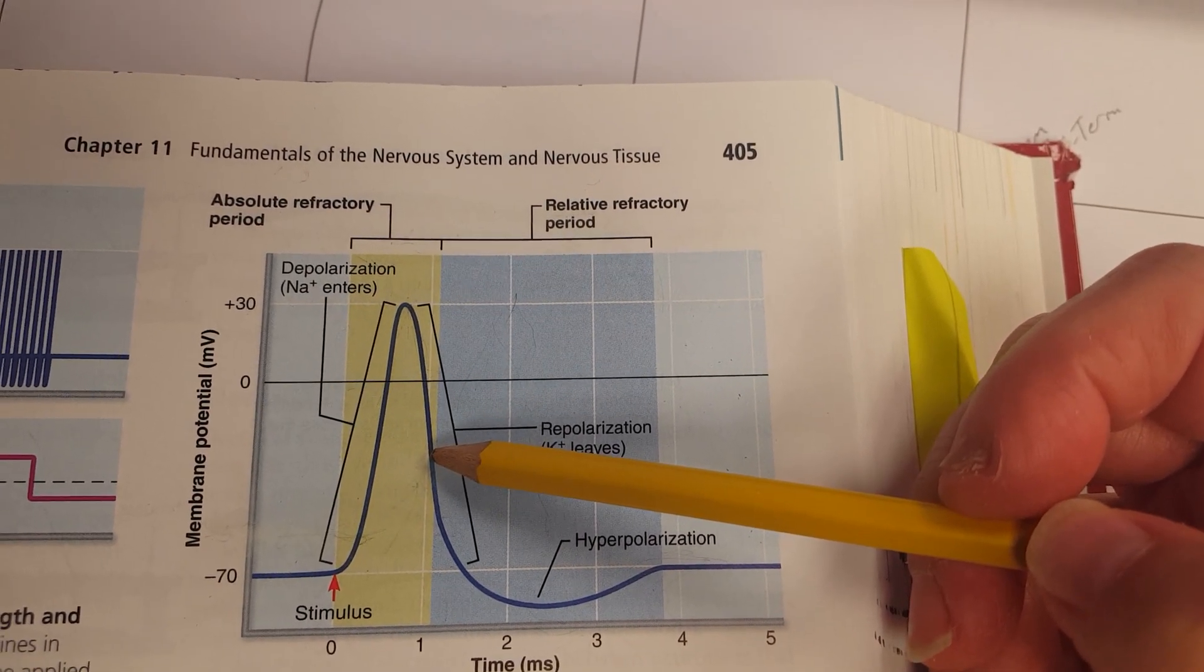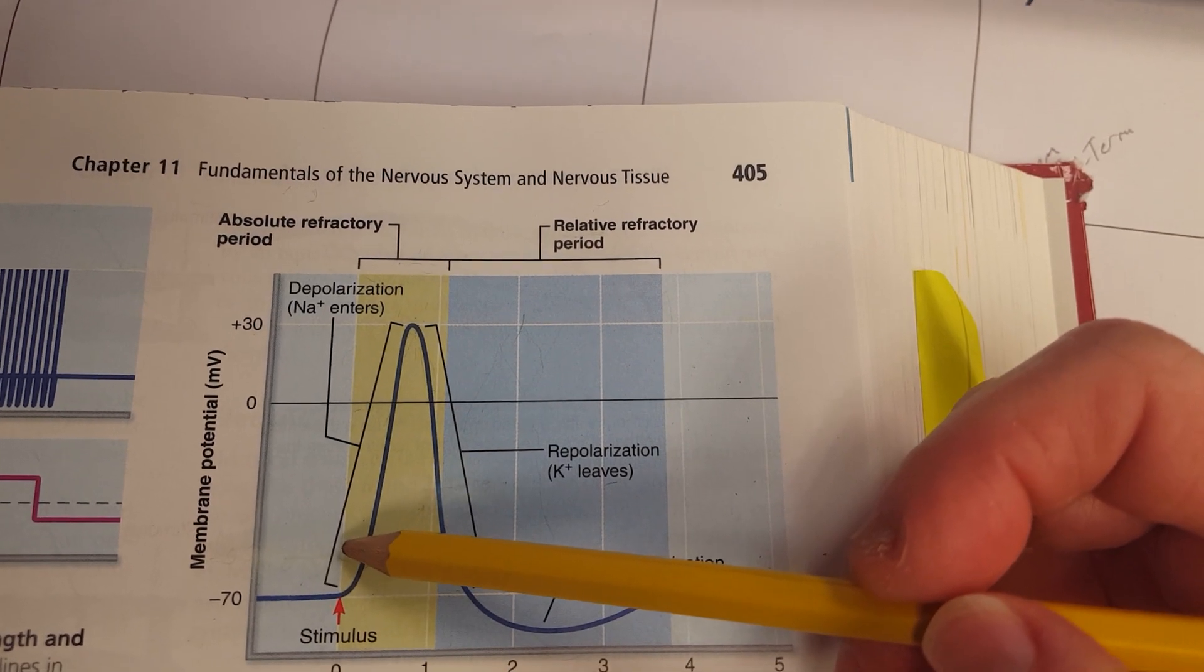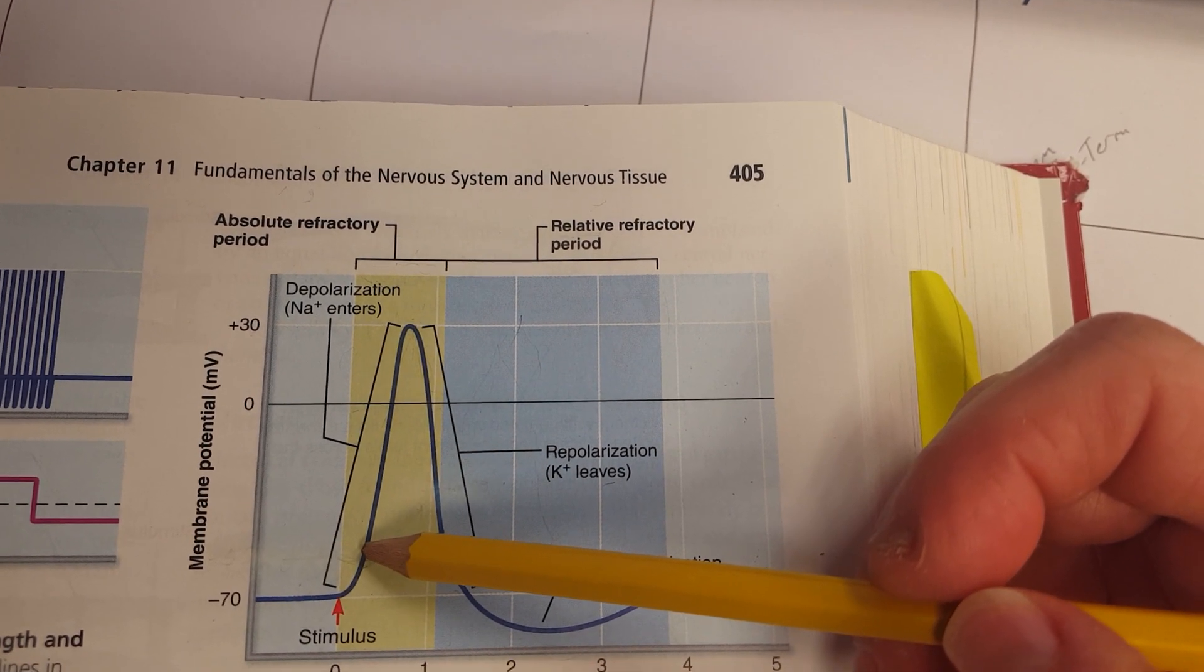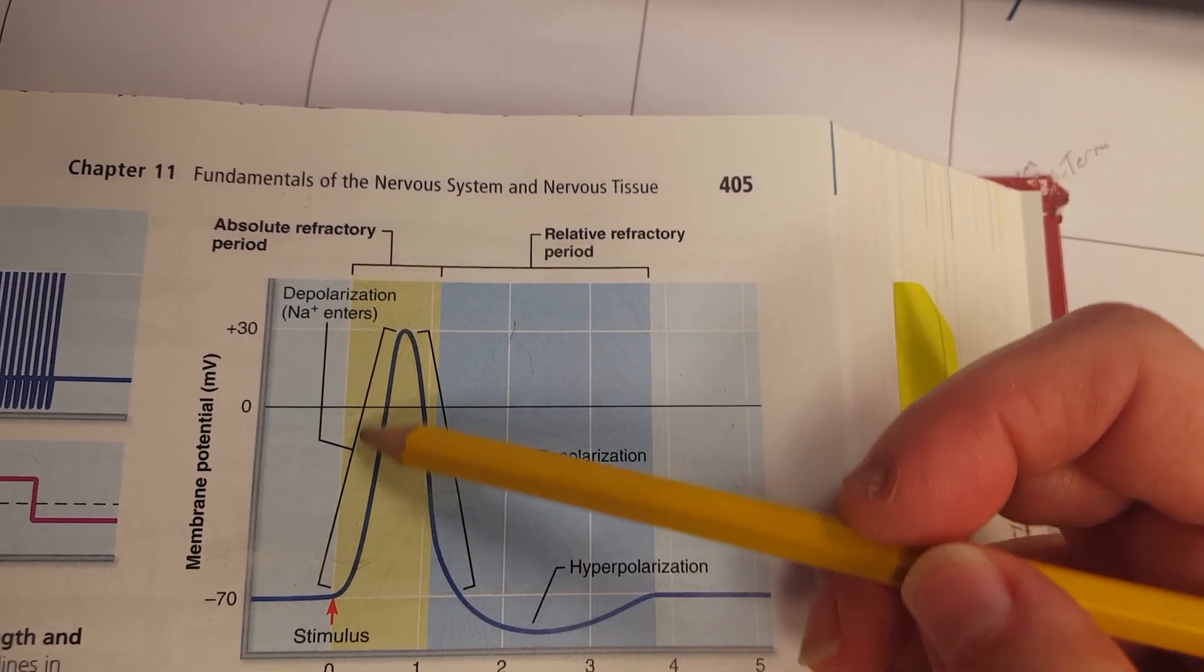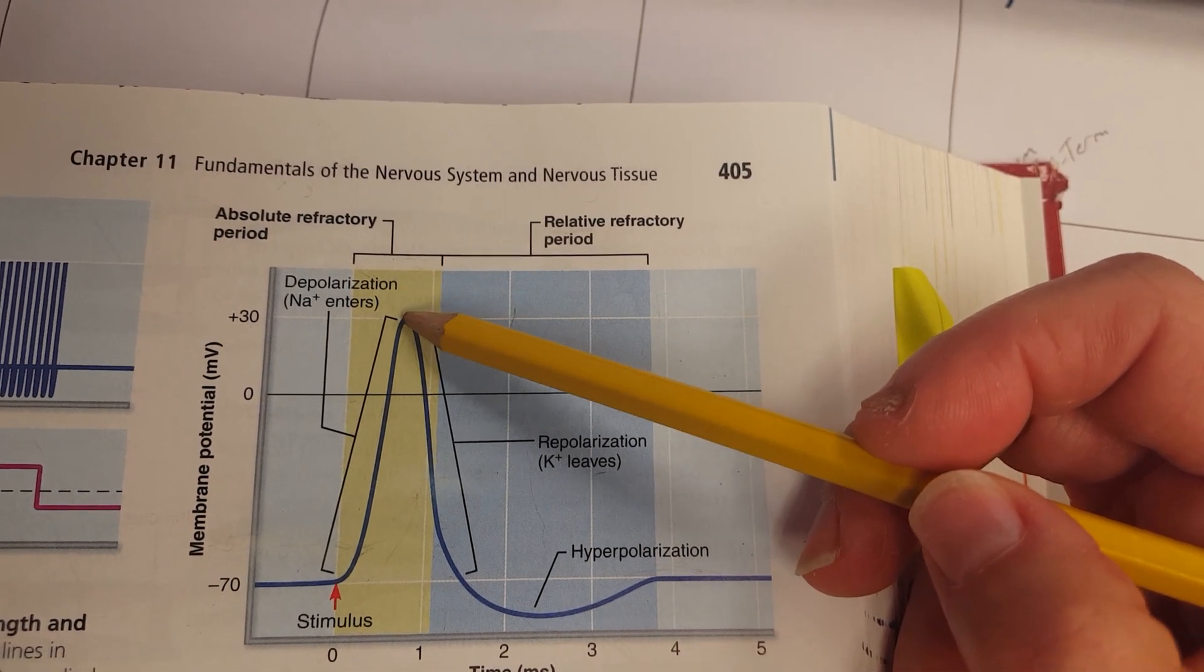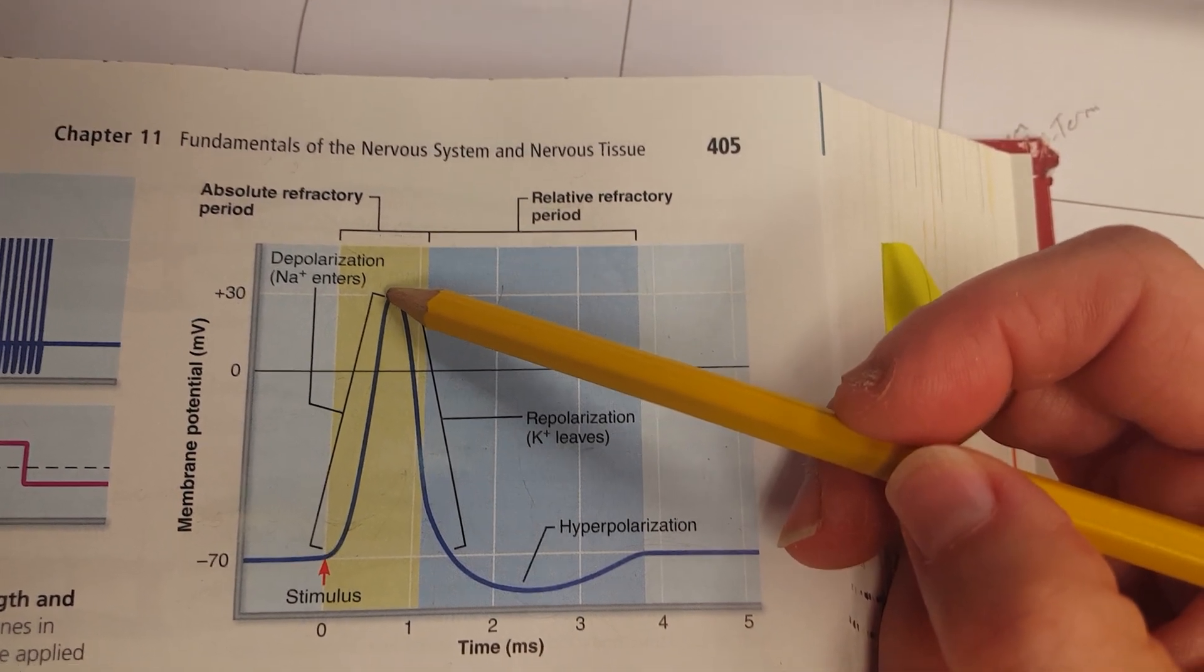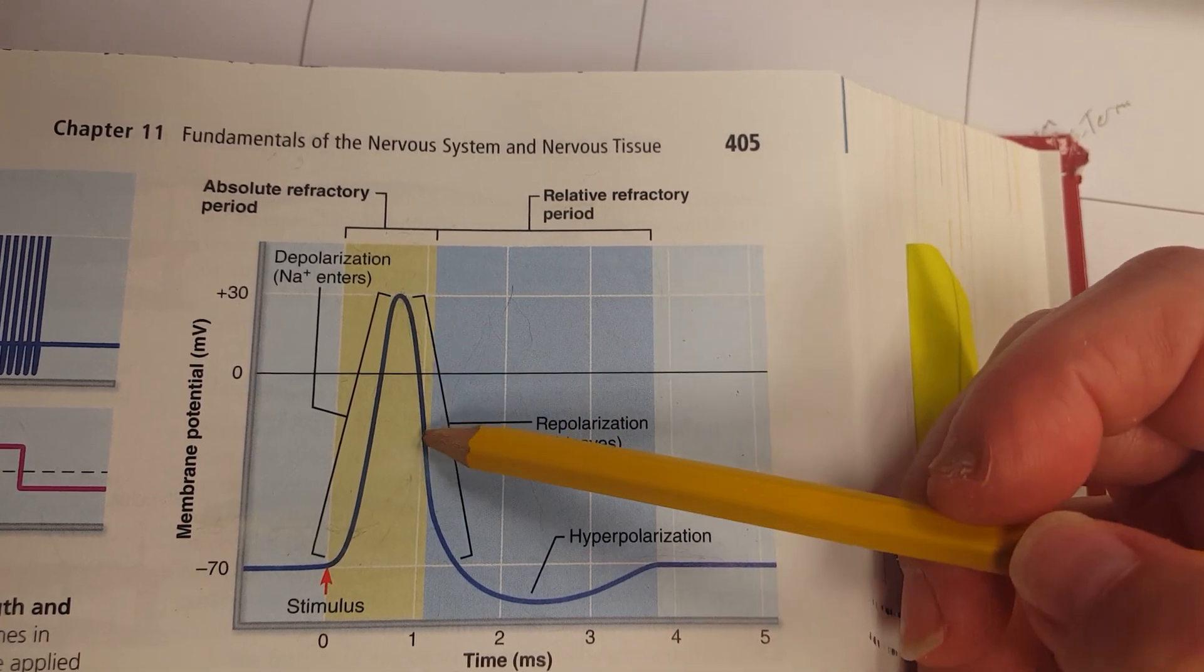Remembering that action potentials are all or none, we have to hit threshold. Once we hit threshold at negative 55 millivolts, we are guaranteed that those sodium voltage-gated channels will open, and that depolarization will occur to positive 30 millivolts, at which point sodium channels close and potassium channels open.